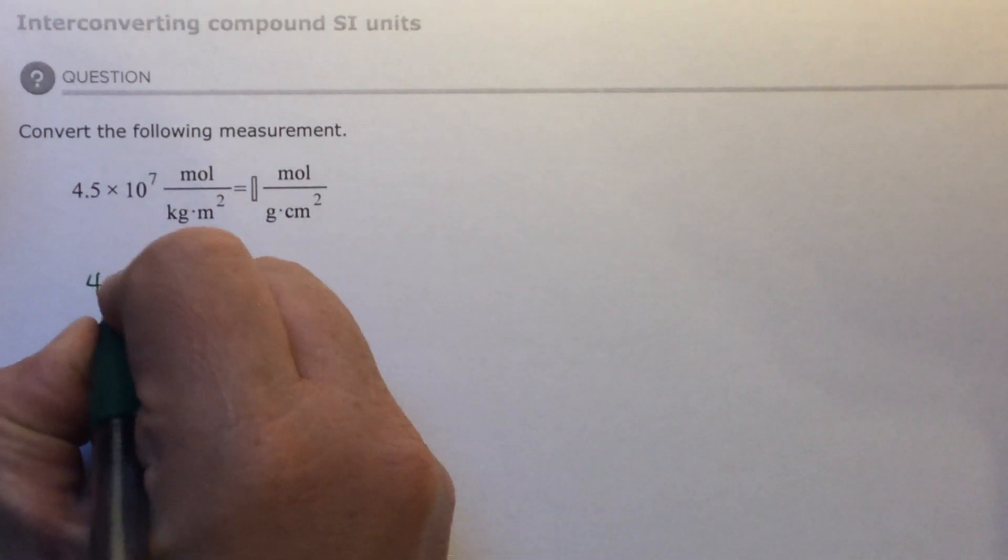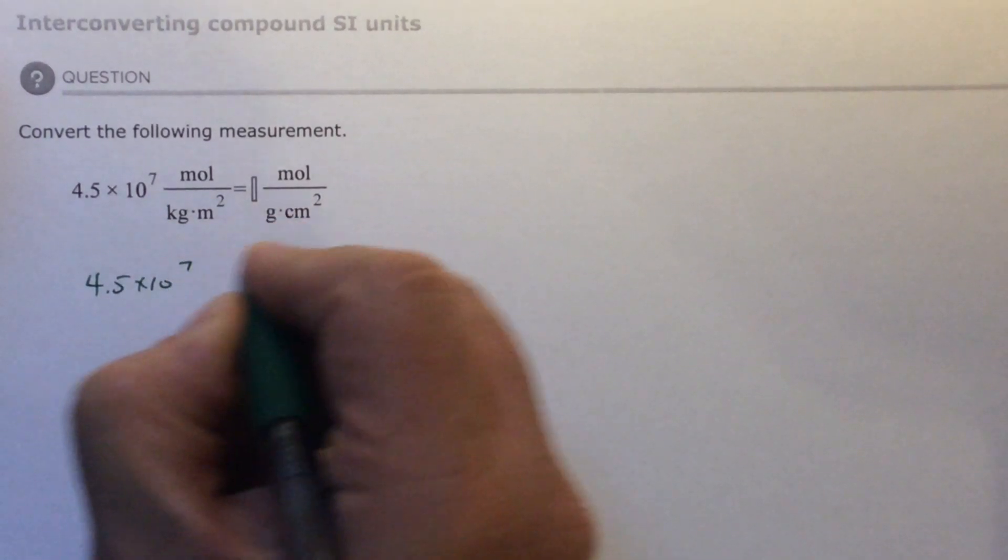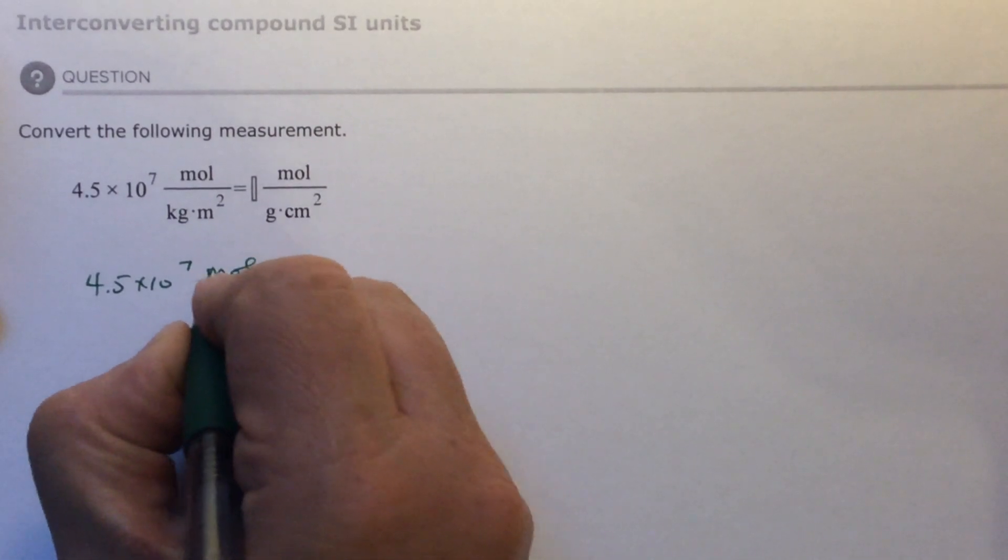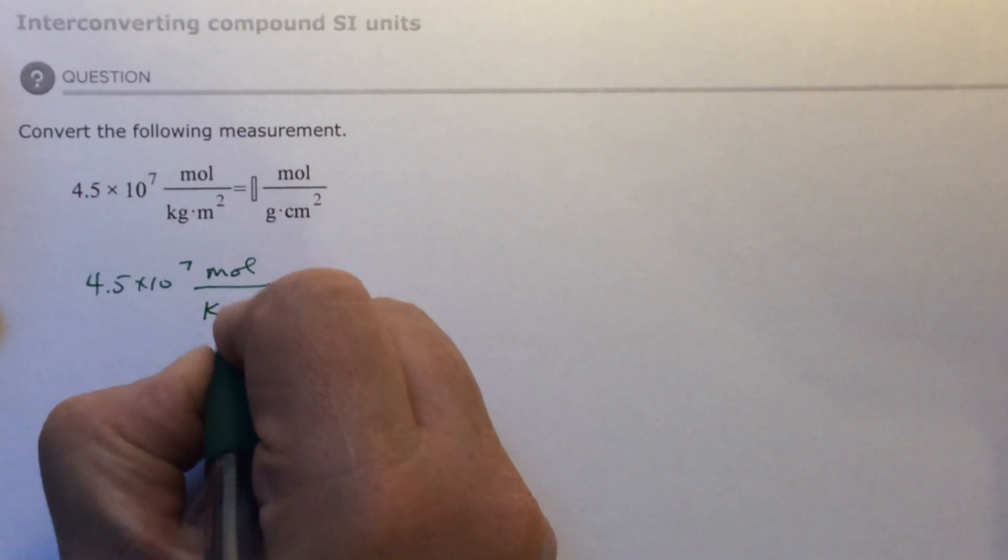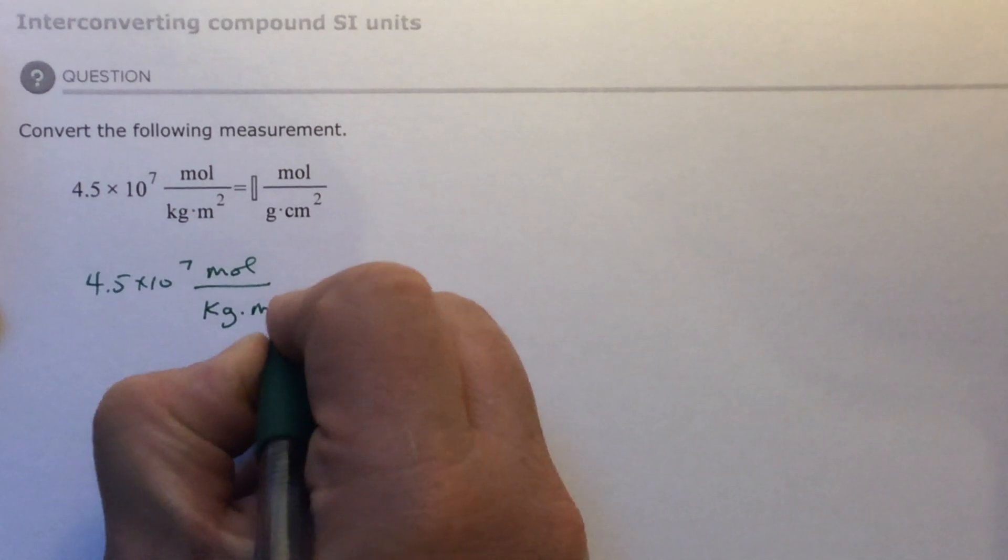So this is going to be 4.5 times 10 to the 7. Now I'm going to write, first of all, what I'm starting with. I'm starting with that.